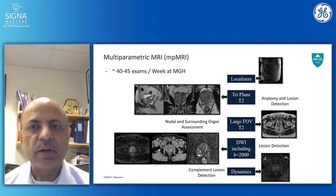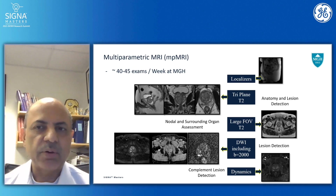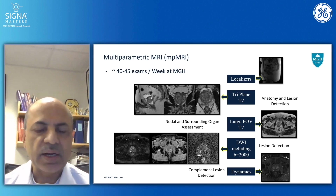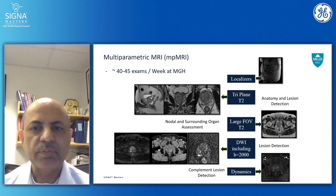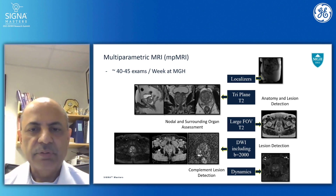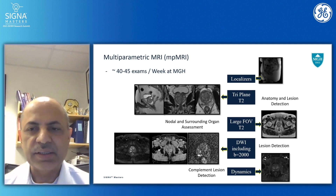Looking at the multiparametric MR protocol that we do at MGH — about 40 to 45 exams per week, a number that keeps rising — we start with localizers, then do triplane T2s, which is the major anatomic sequence for looking at the gland and detecting lesions with multiplanar capability. Following that, we do a large field-of-view T2 to look at the entire pelvis, check for lymphadenopathy and ancillary findings. Then we have the functional sequence of DWI, which complements the T2s for cancer detection and allows biologic grading by measuring the ADC value.